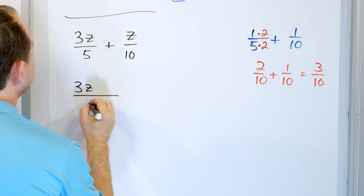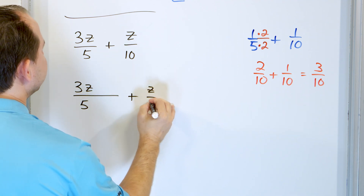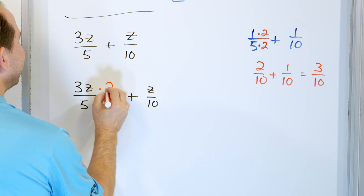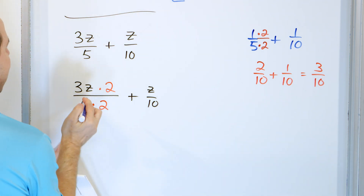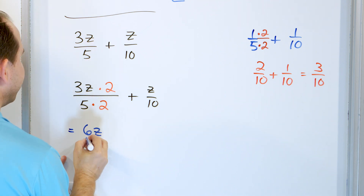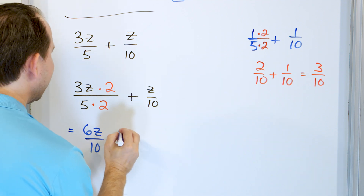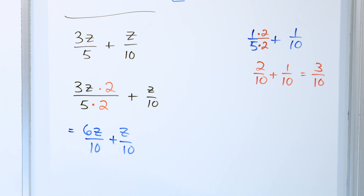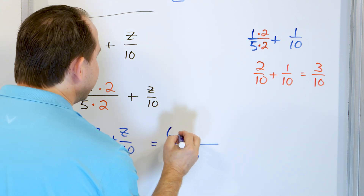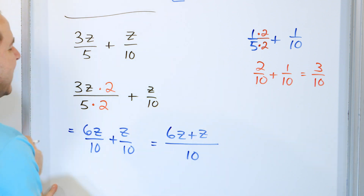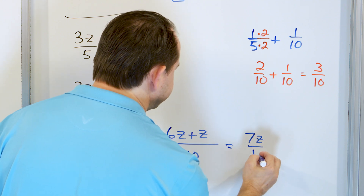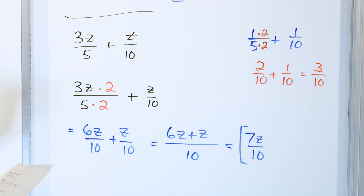So for three Z over five plus Z over ten: since five times two is ten, I'll multiply the first fraction top and bottom by two. Three Z times two is six Z, giving six Z over ten, plus Z over ten. Now we have a common denominator. Ten goes on the bottom and I add the numerators: six Z plus Z. These are like terms — six plus the implied one is seven — giving seven Z over ten. That is the final answer.